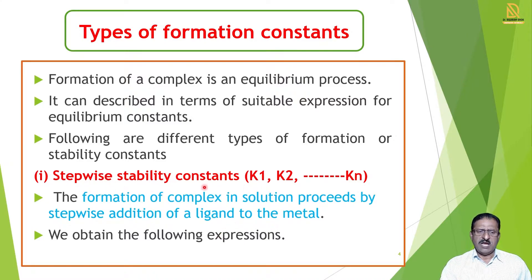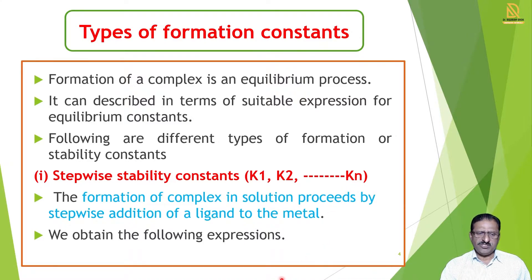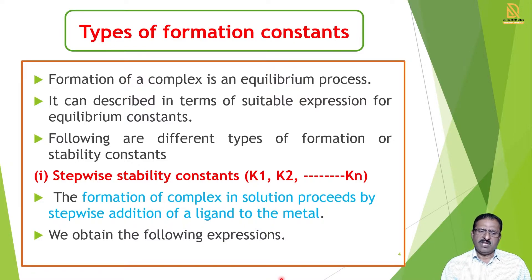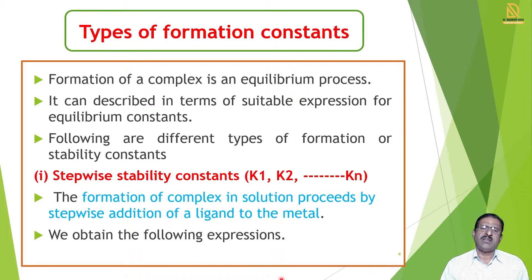The stepwise stability constant is denoted by K₁, K₂, up to Kₙ. In this case, the formation of complexes in solution proceeds by stepwise addition of ligand to the metal — one ligand is added, then a second, third, fourth, fifth, up to n ligands. By adding ligands step by step, we can observe what the formation constant is and how it varies. We write these different reactions step by step.